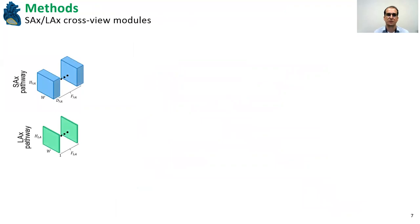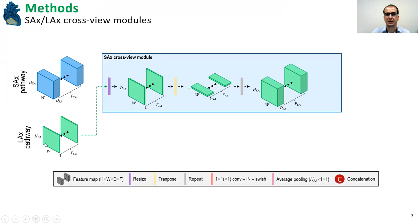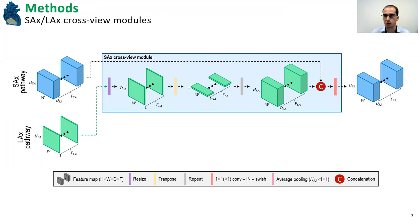These cross-view modules, what they have to do is that they have to concatenate the two sets of features and then create a new set of feature maps. And so in order for this to be possible, we have to take into account the correspondence between the dimensions of the feature maps. So in the short axis cross-view module, this means to first resize the height dimension of the feature map, the long axis feature map, that corresponds to the depth dimension, and then to transpose the coordinates and repeat the feature maps across the height dimension of the short axis. Now we have feature maps of the same size that can be concatenated and fused using a one by one 3D convolution.